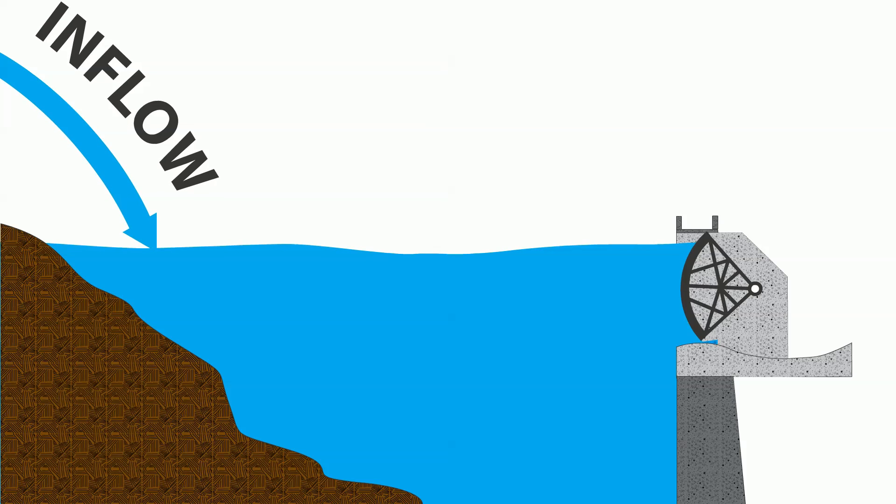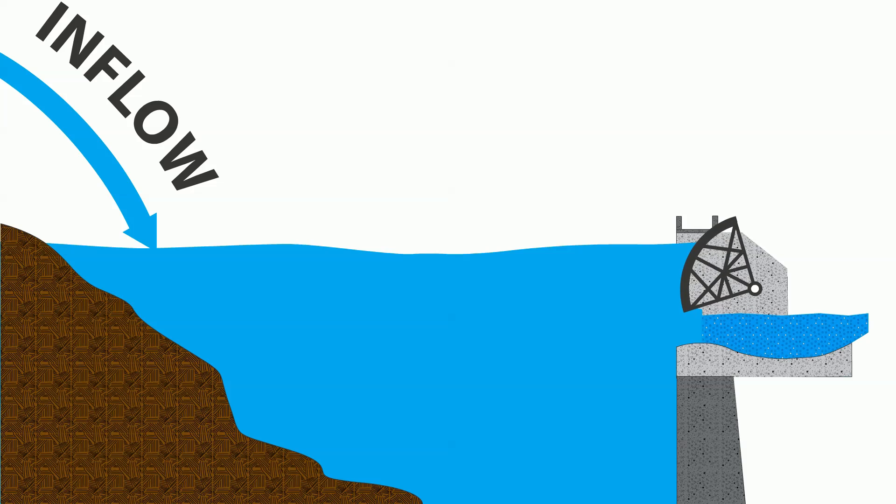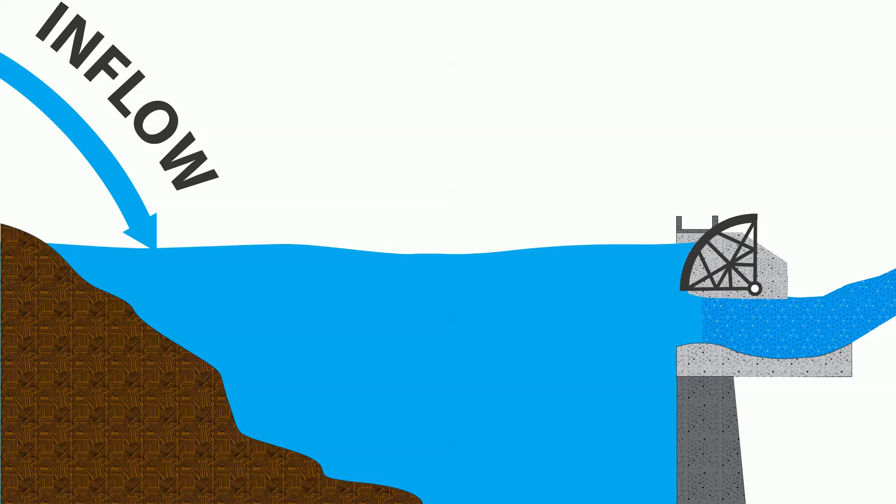The spillway gates are opened to bypass the excess flood water at the dam. When the flow out through the spillway is equal to the inflow into the reservoir, the reservoir elevation stops increasing.